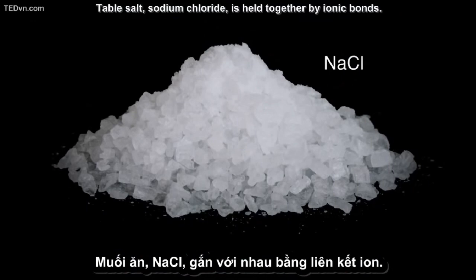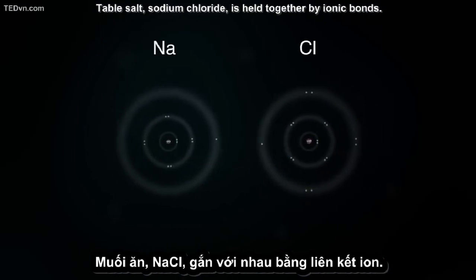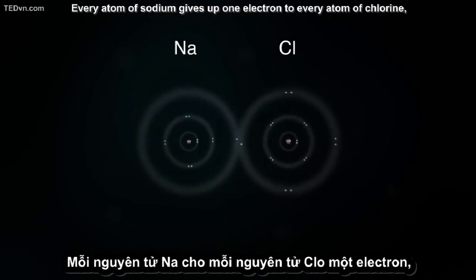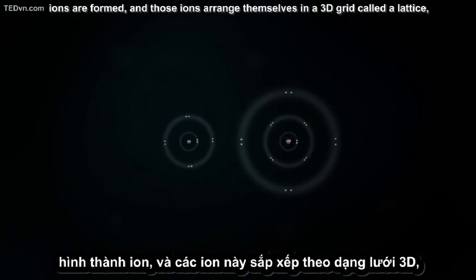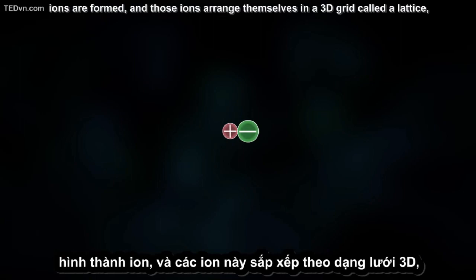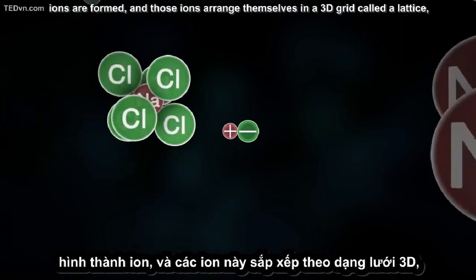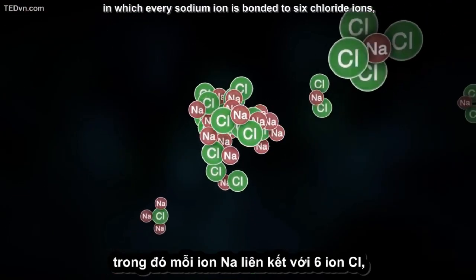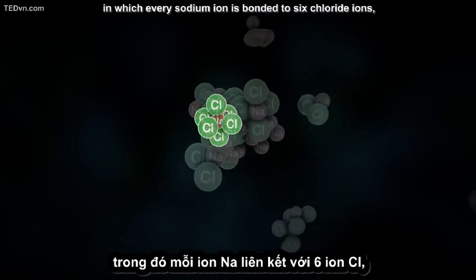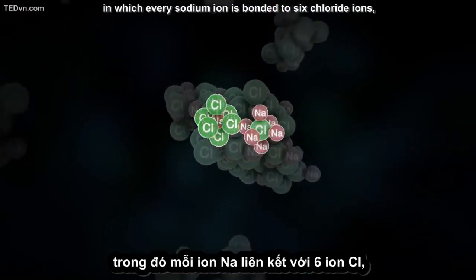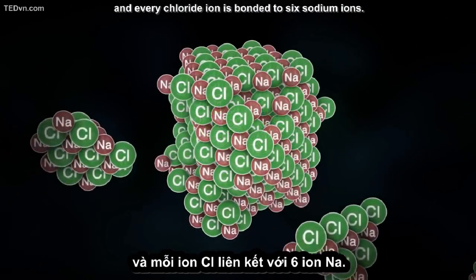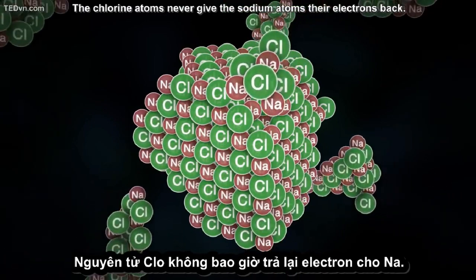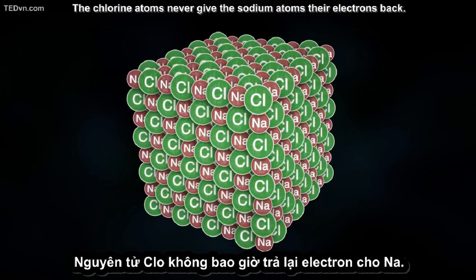Table salt, sodium chloride, is held together by ionic bonds. Every atom of sodium gives up one electron to every atom of chlorine. Ions are formed, and those ions arrange themselves in a 3D grid called a lattice, in which every sodium ion is bonded to 6 chloride ions, and every chloride ion is bonded to 6 sodium ions. The chlorine atoms never give the sodium atoms their electrons back.